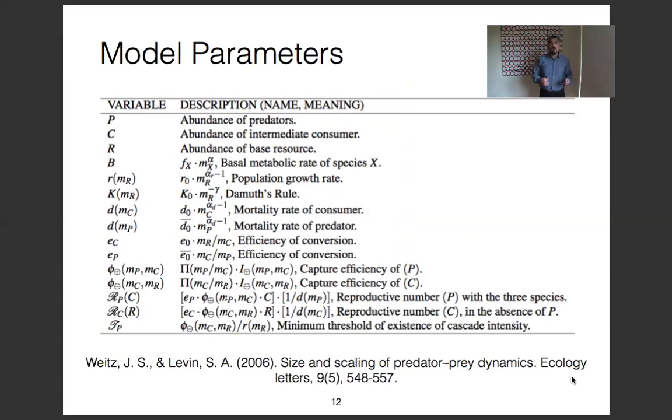Thus, the model aims to capture the following research hypothesis: The body mass of the species, by influencing the strength, distribution, and characteristics of the interaction, determines the mass range of species that determine coexistence, energy requirements, and intensity of the trophic cascade.